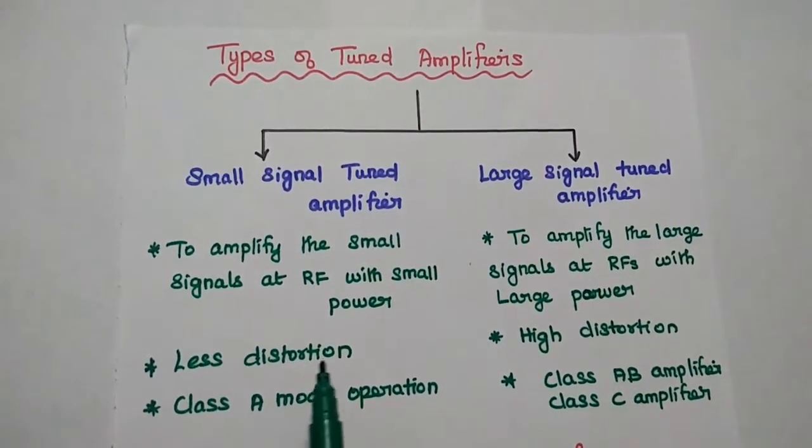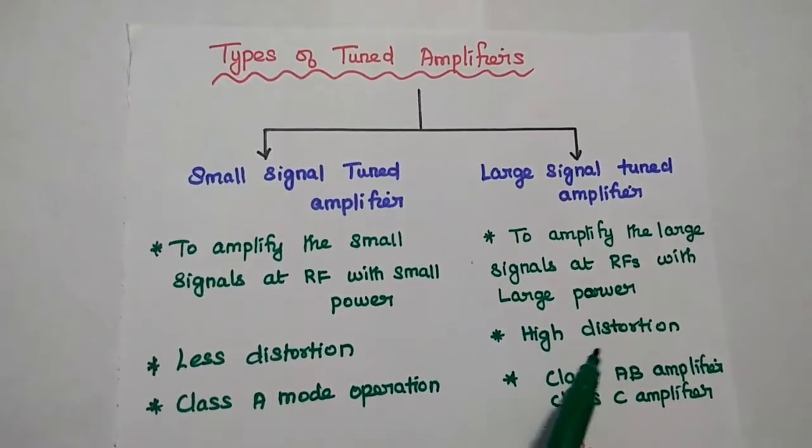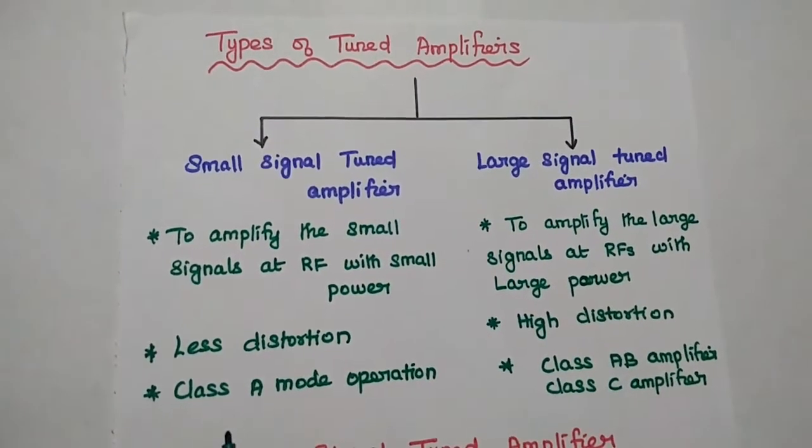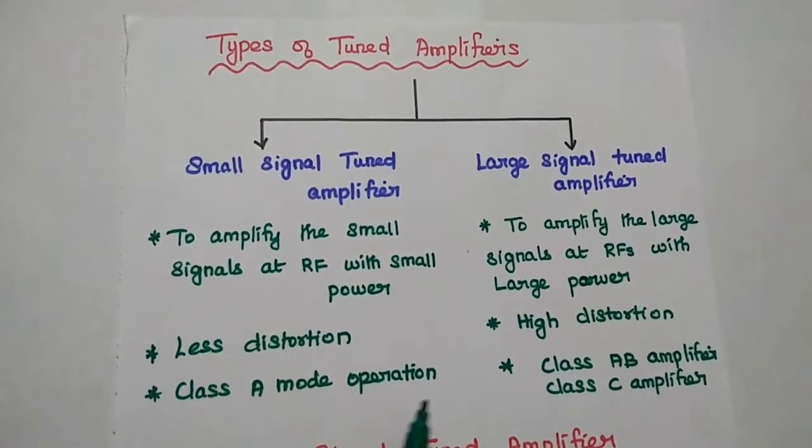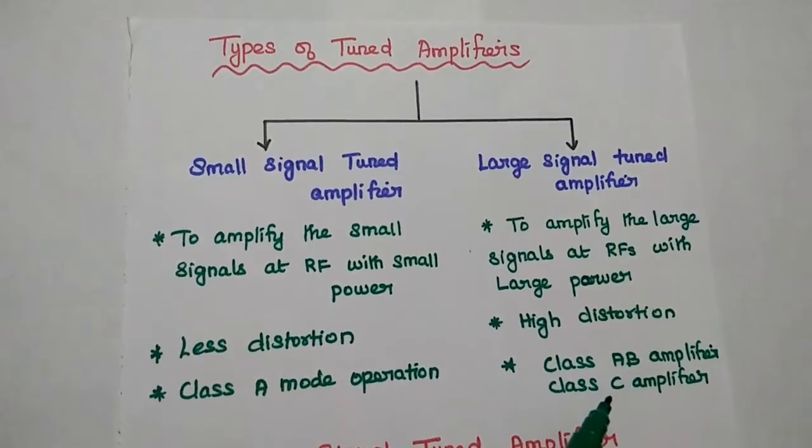It provides less distortion and works under class A mode operation. Large signal provides very high distortion and is based on class A, B, class C amplifiers.